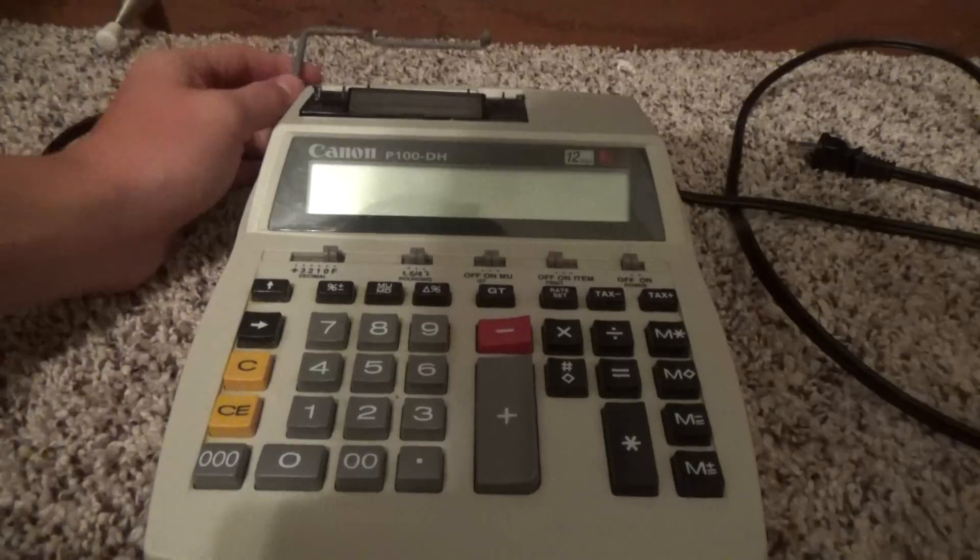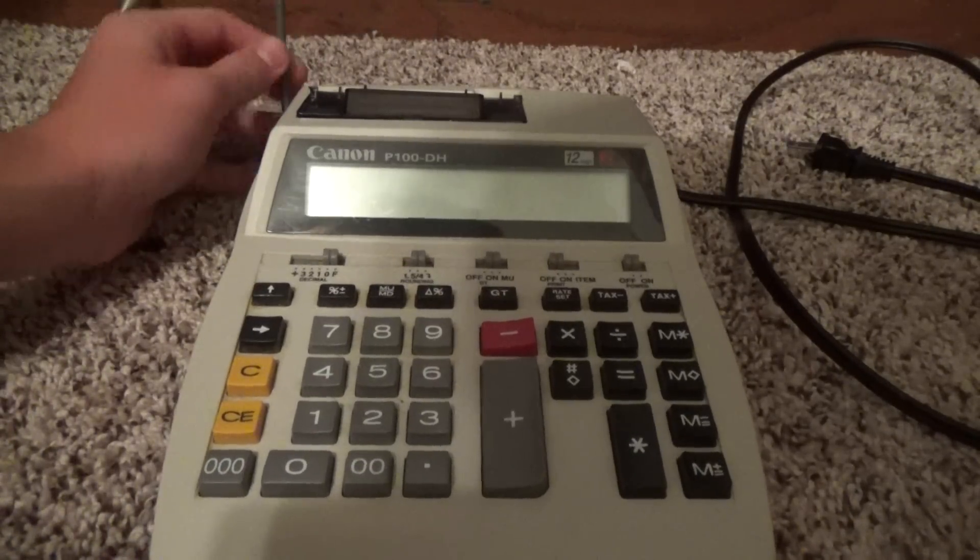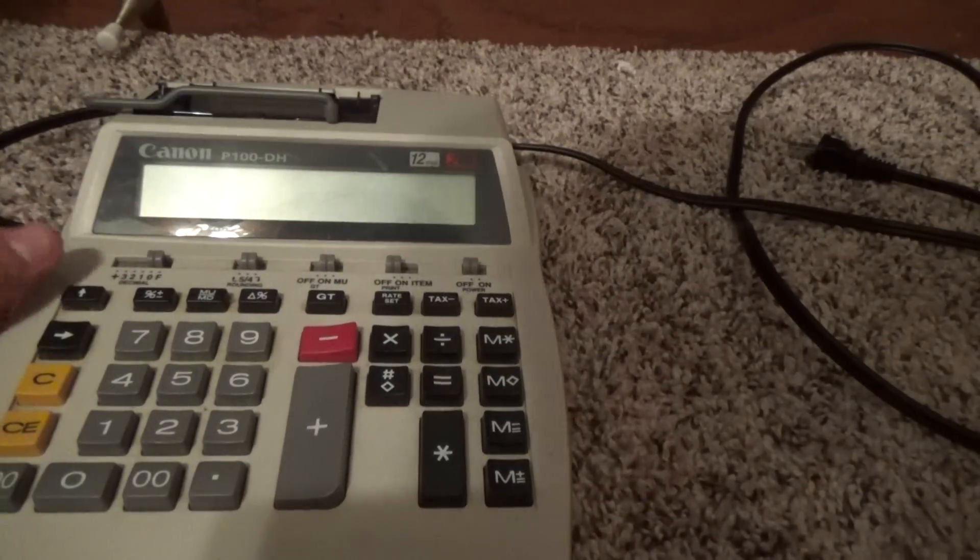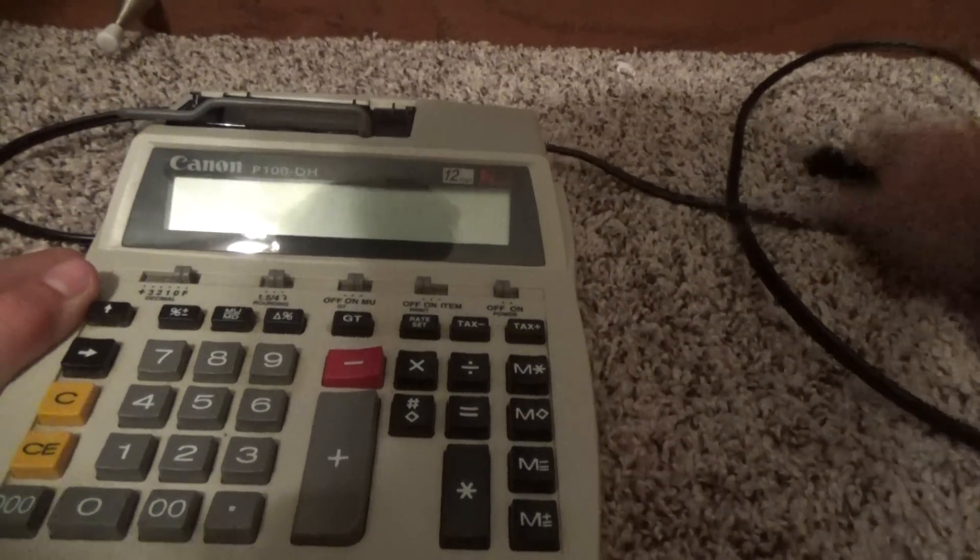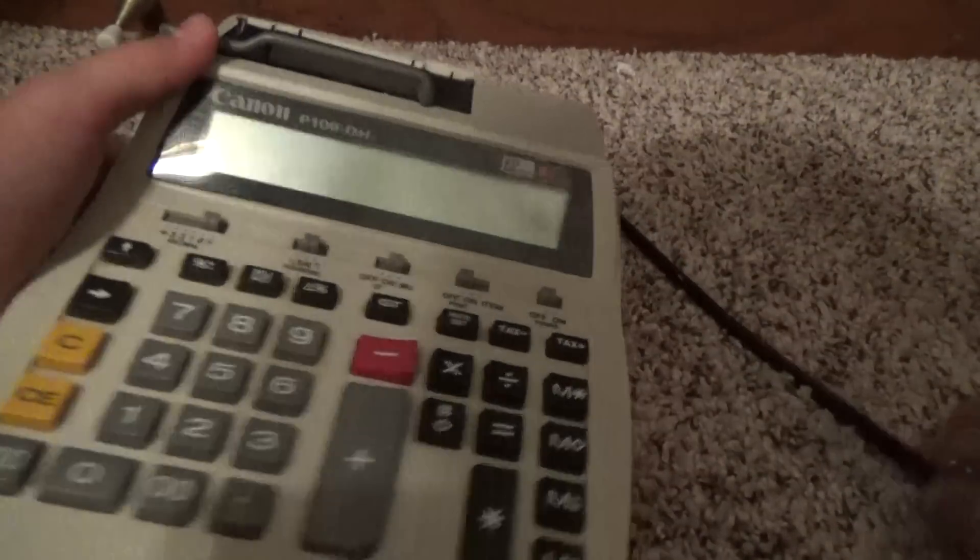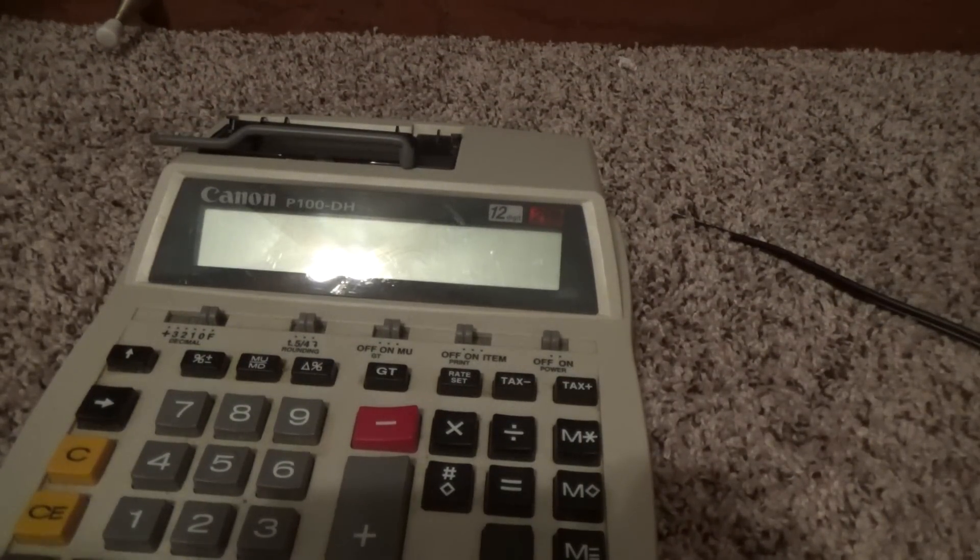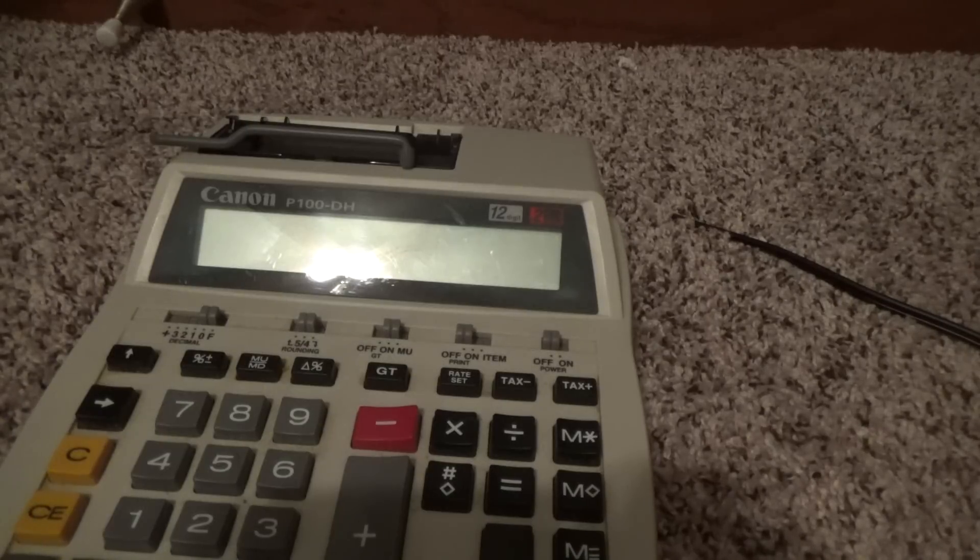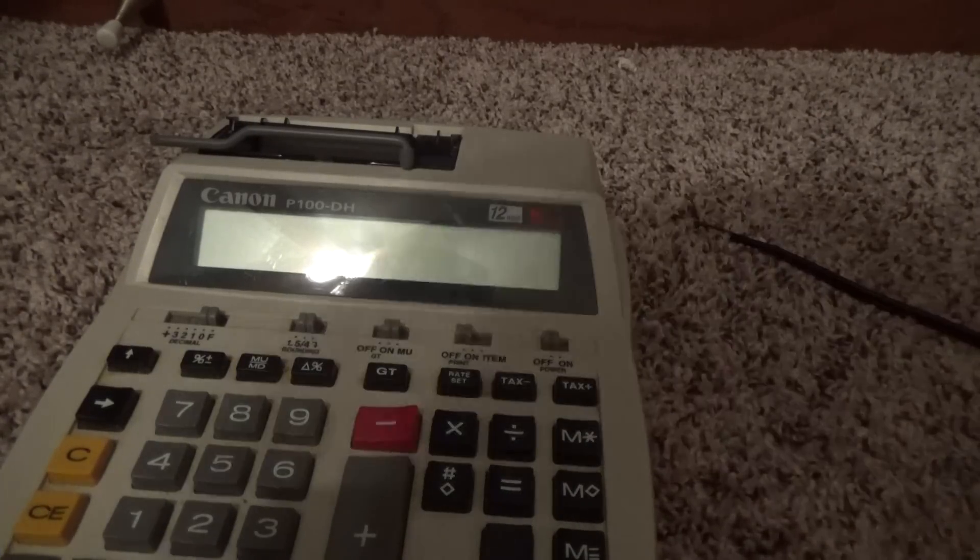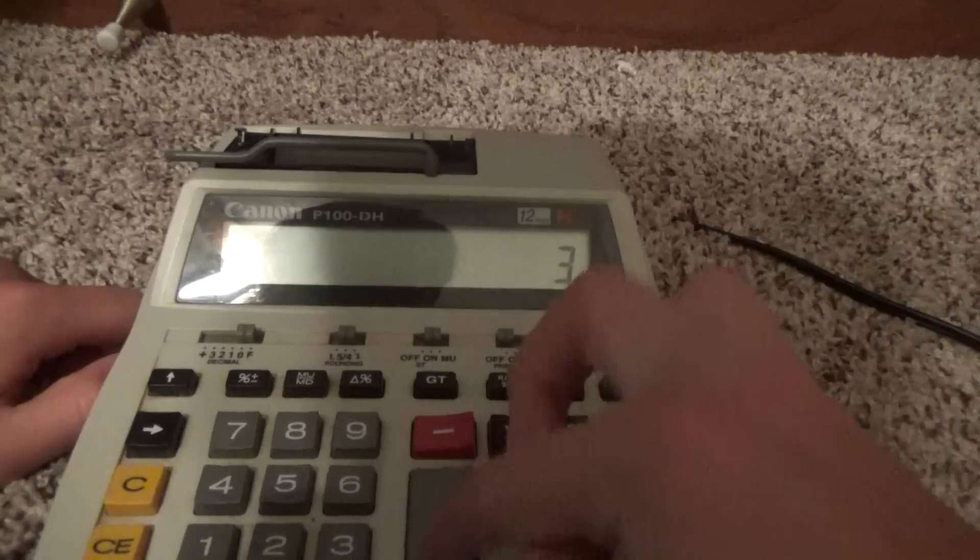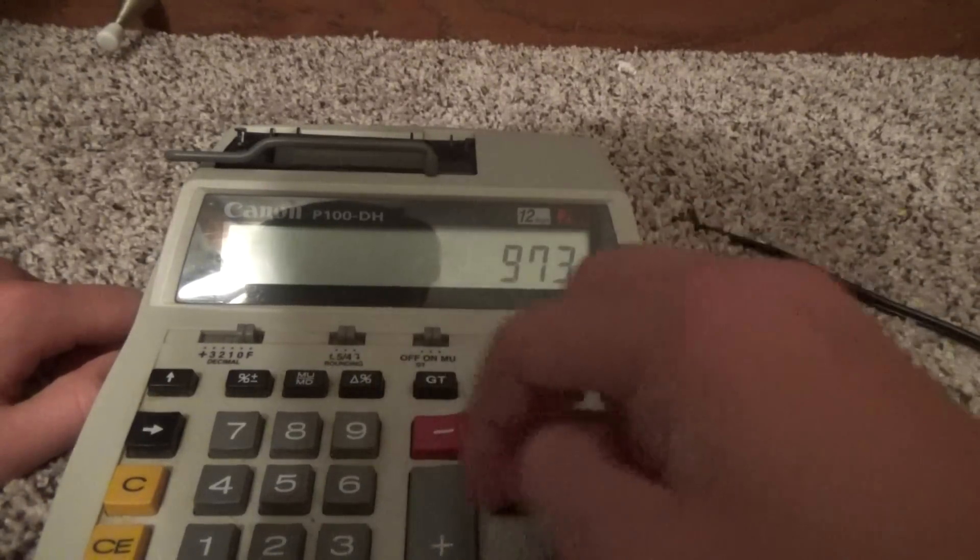Right here I have a Canon P100DH printing calculator. It's a 12-digit display, LCD, two-color printing. I'll plug it in here so you can get a little look at its magic. Alright, and here's the on-off switch. There you are, some simple addition.